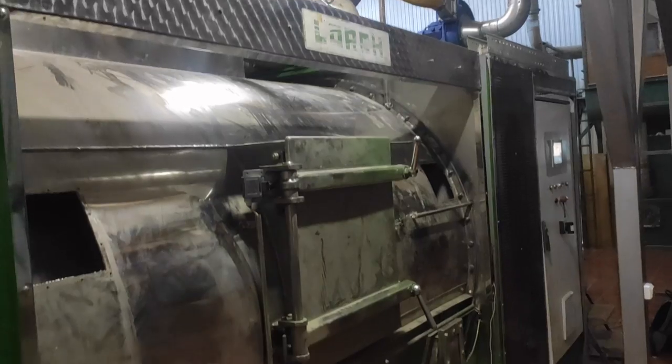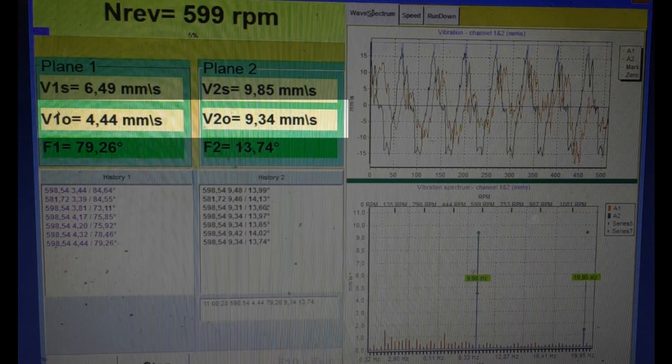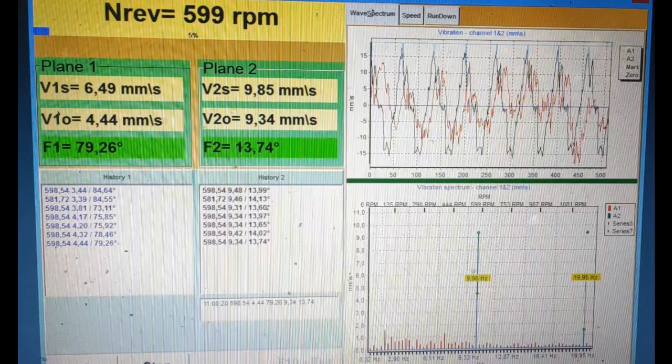Before balancing, it is recommended to make measurements in vibrometer mode. If the value of the total vibration is approximately equal to the value of the reverse component, it can be assumed that the main contribution to the vibration of the machine is unbalance of the rotor, and it is possible to proceed to balance the rotor.